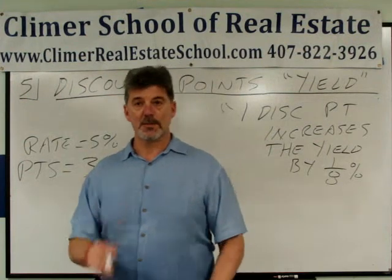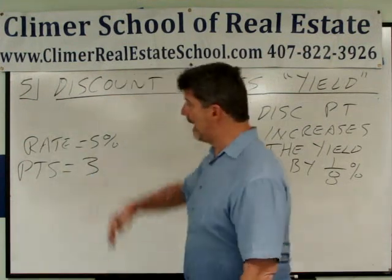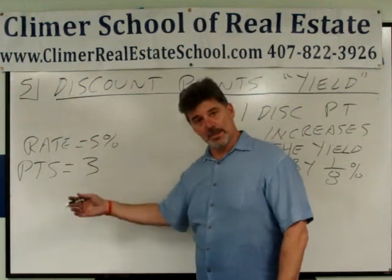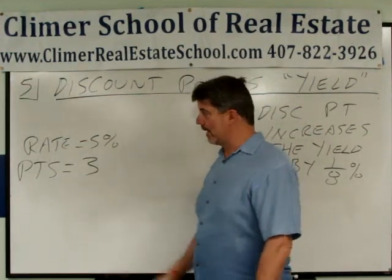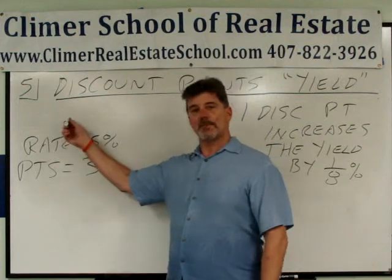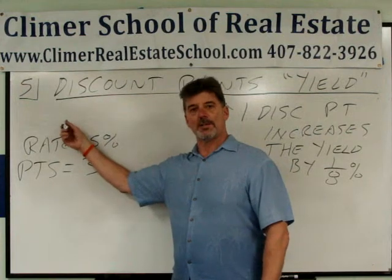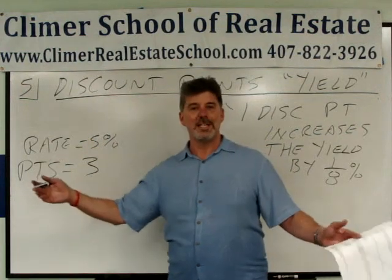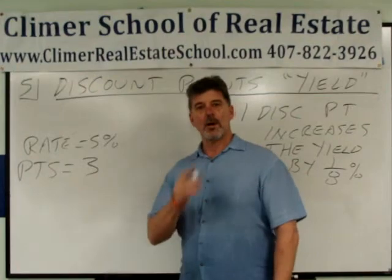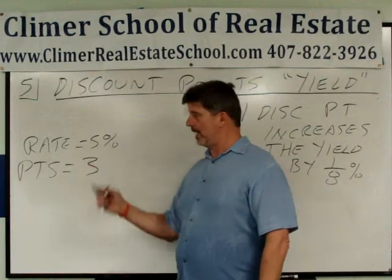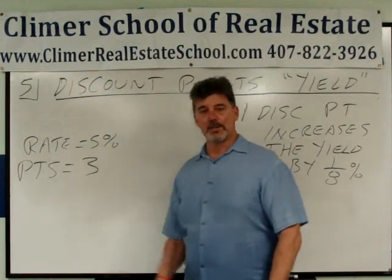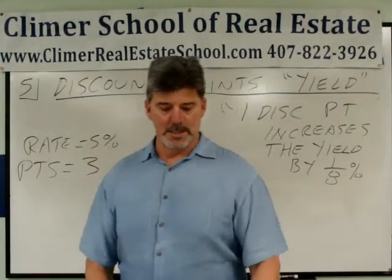Here's how you do it. First of all, make a list of the information, just like usual. Now I did this on purpose — you notice I did not put down the loan amount. You know why? It's got nothing to do with the yield problem. Nothing. All that matters is: what's the rate? Five percent. How many points? Three. They give that to you in the problem.